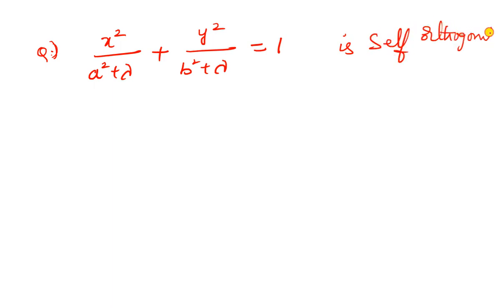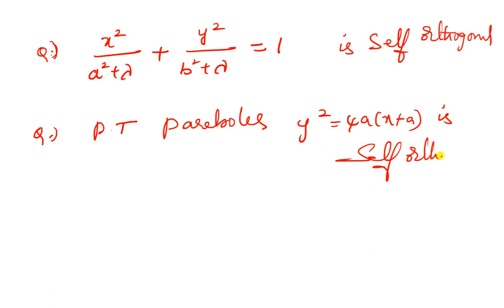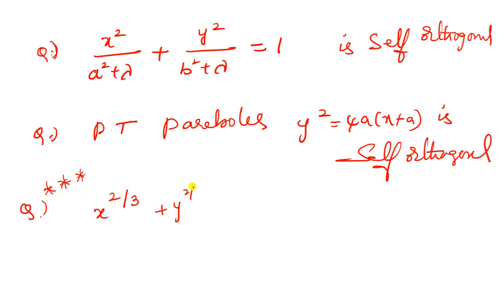We will prove it is self-orthogonal. The differential equation of the family of orthogonal trajectories should be the same as that of the original family. Prove that the parabolas y-squared equals 4a into x plus a is self-orthogonal. Also: x to the power 2/3 plus y to the power 2/3 equals a to the power 2/3 — find the orthogonal trajectories of that family of curves.